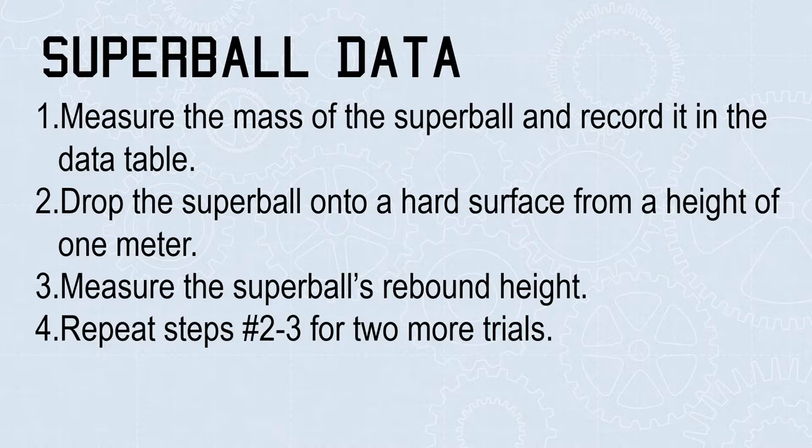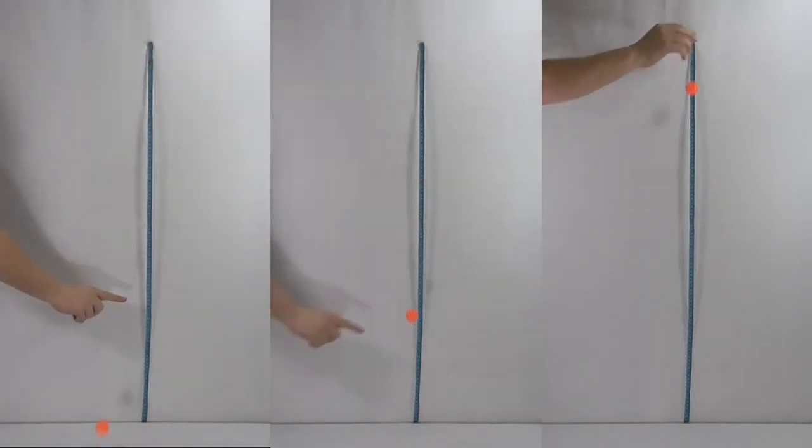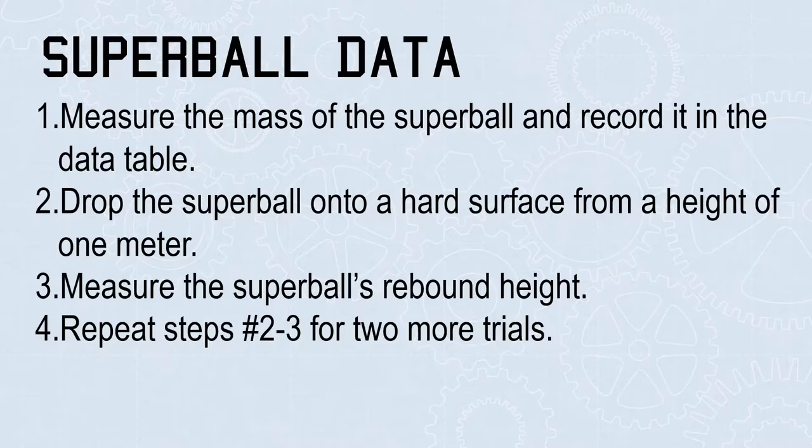4. Repeat steps 2 and 3 for two more trials. One person drops the ball, one person measures the height. 5. Calculate the average rebound height and record it in the data table.